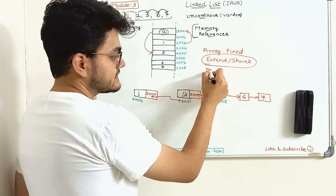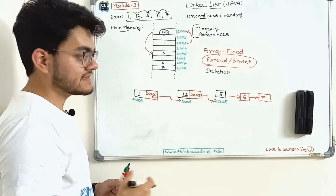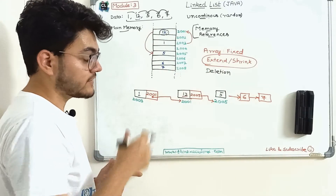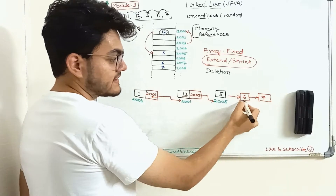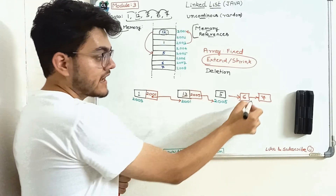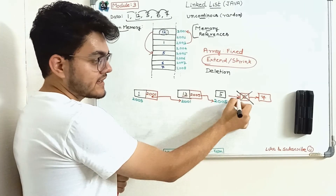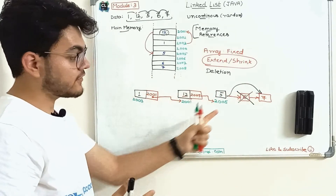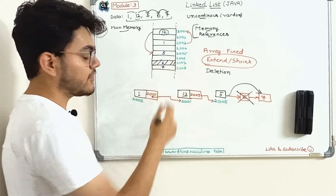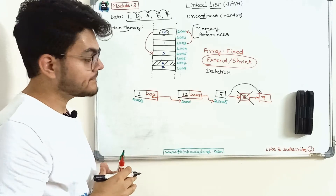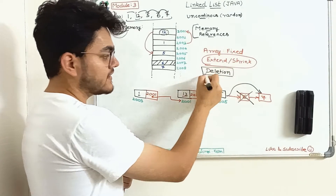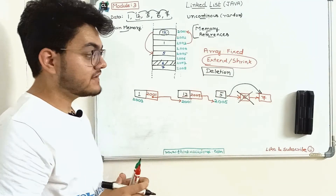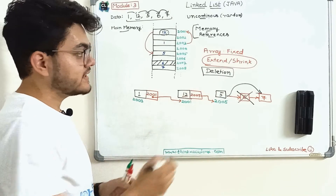The second advantage is deletion. Array size is fixed, so it always occupies memory, which is an important resource. In linked list, if we want to delete six, we can deallocate that node and change the reference from five to point directly to seven. Six will get deleted permanently from main memory, freeing that space for other processes. This provides two very convenient features — the ability to delete and shrink elements — which makes linked list better than array.